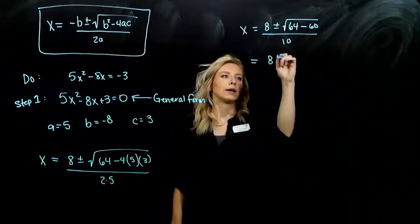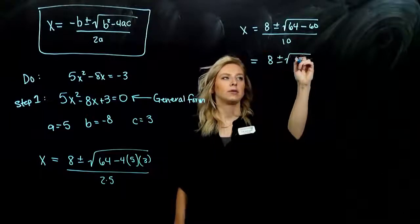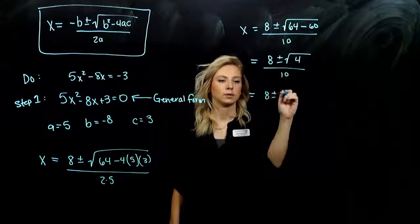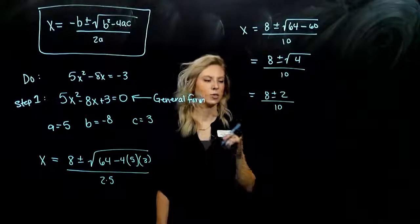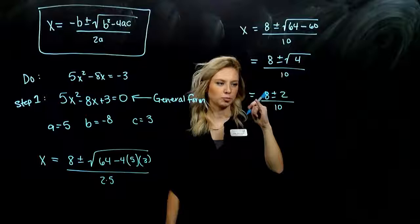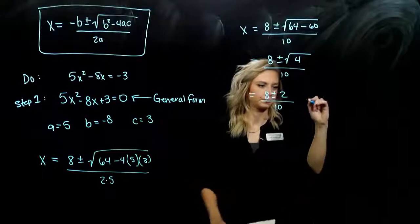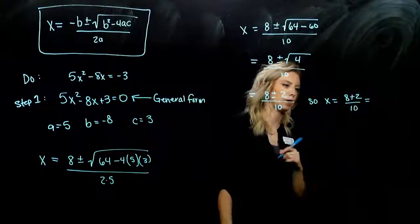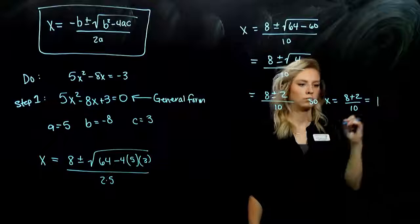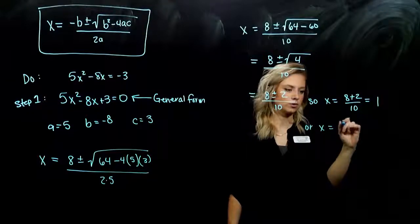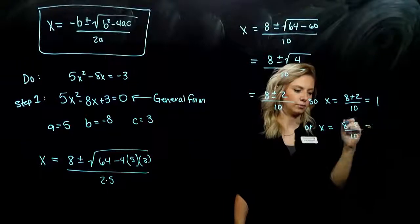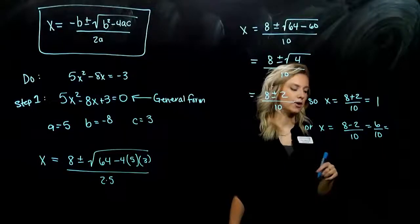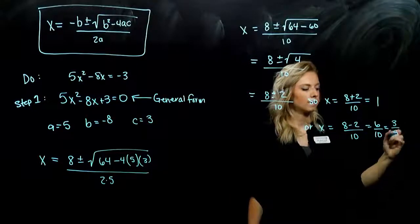So I've got x equals eight plus or minus the square root of what on the inside there? 64. And I'm subtracting off what value? So 15 times four will give me 60. And that's all over 10. Just simplifying as we go. I've got eight plus or minus the square root of four all over 10. And what is the square root of four? Two all over 10. So I've got two different options. I've got eight plus two over 10.